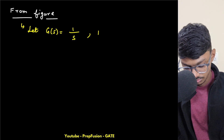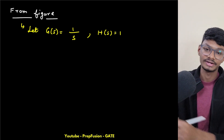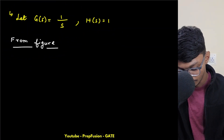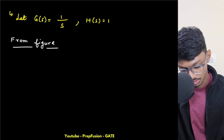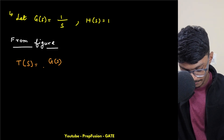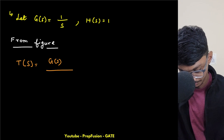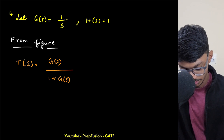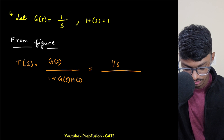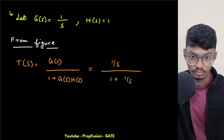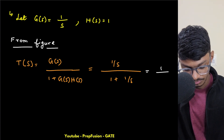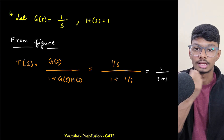Assuming G(s) = 1/s and H(s) = 1, the closed-loop transfer function T(s) = G(s) / (1 + G(s)·H(s)) = (1/s) / (1 + 1/s), which simplifies to T(s) = 1/(s + 1). Since we're interested in the frequency response, we replace s with jω, giving T(jω) = 1/(jω + 1).